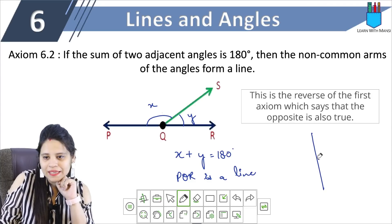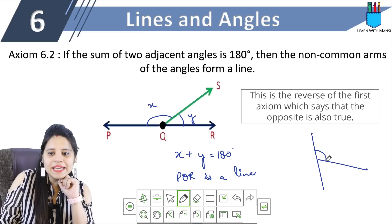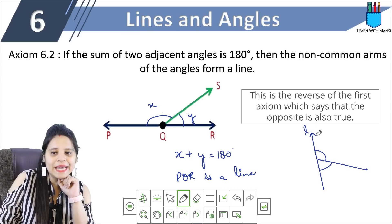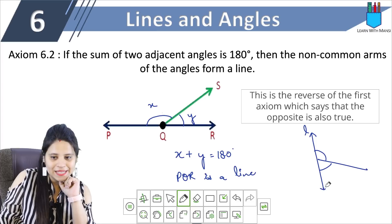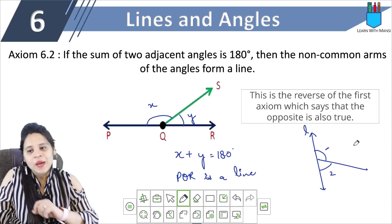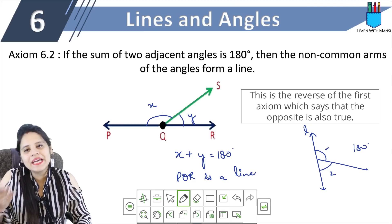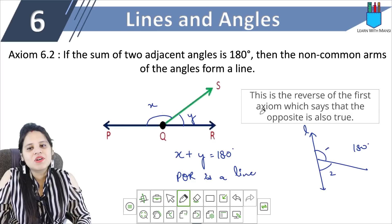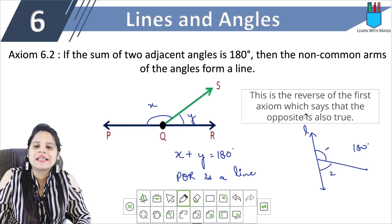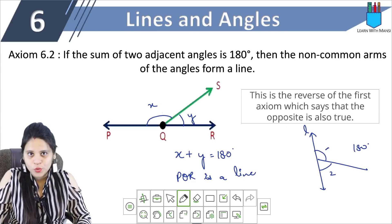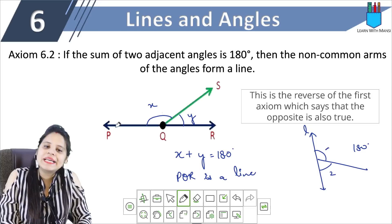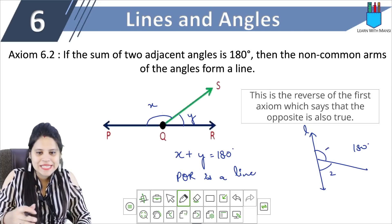We have to prove it in the same way. I'll make an angle diagram — this is angle 1 and this is angle 2. So let's prove that L is a line by showing that angle 1 plus angle 2 is 180 degrees, and then we can conclude this is a line. It's the opposite of the same thing — this is the reverse of the first axiom, which says the converse is also true: if the sum is 180 degrees, then it will form a line.